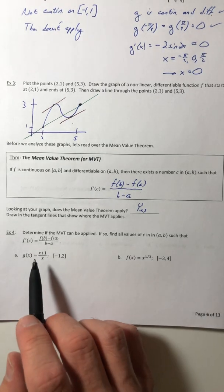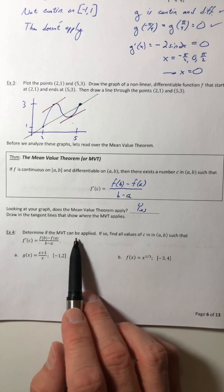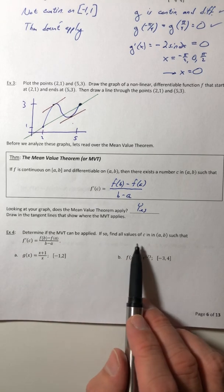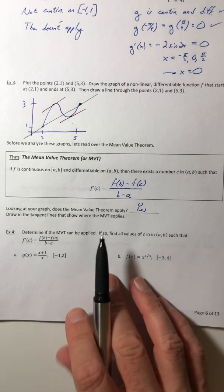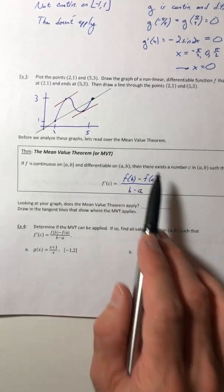Okay, let's look at some examples with the mean value theorem. So example four, determine if the theorem can be applied, and if so, find all values of c in the open interval from a to b such that this equation holds true.